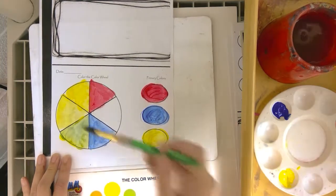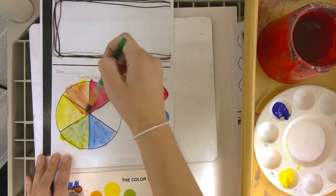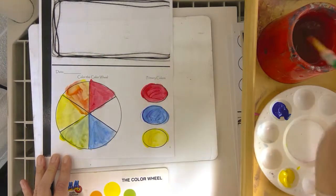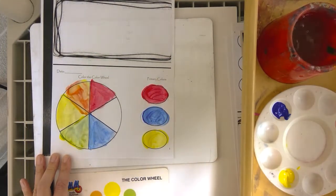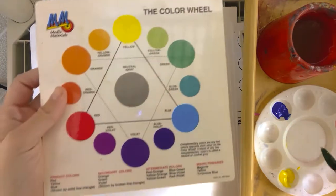I'm going to take a little bit of red. You really just need a little bit to make my orange. That actually looks pretty good. Okay, who knows how to make violet or the color purple?